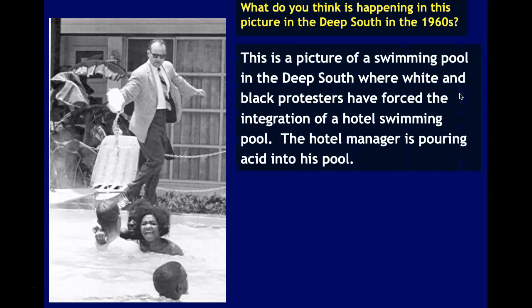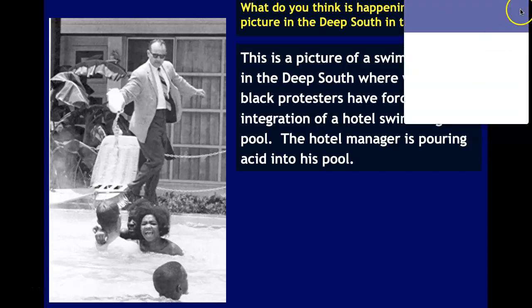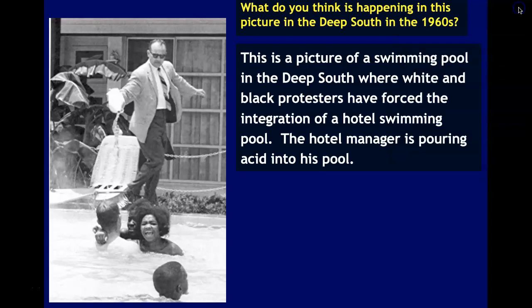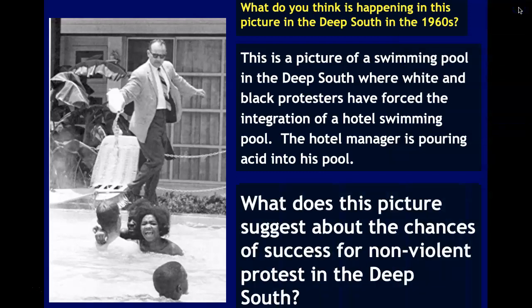So you can see what is happening — quite shocking — and it gives us an impression of what sort of things protesters could expect when they tried to desegregate public facilities in the southern states. This is in Mississippi. You can see the hotel manager is pouring acid in his pool after protesters tried to enforce their legal right to swim in a desegregated swimming pool. Now, what does this picture suggest about the chances of success for nonviolent protests in the deep south? Pause the video and answer that question.